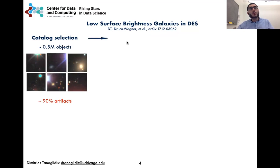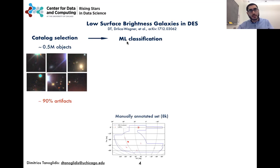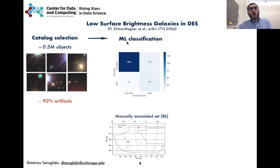To remove these, we employed machine learning classifiers, specifically support vector machines, trained on a manually annotated dataset that we created by inspecting all objects in seven random patches on the footprint of the survey. Our goal was to minimize the false negatives, as you can see here.